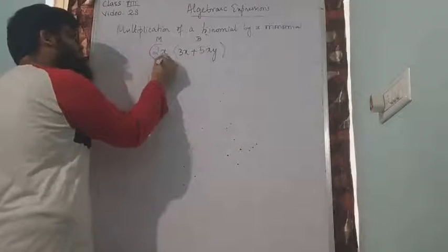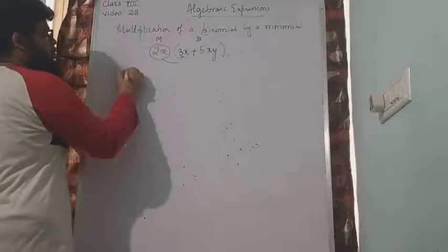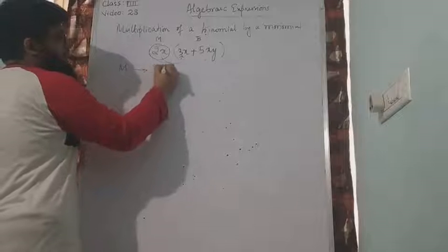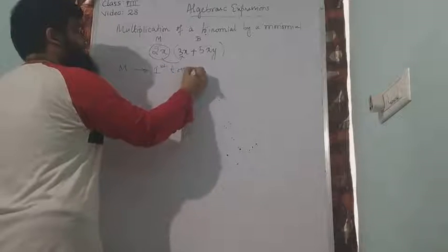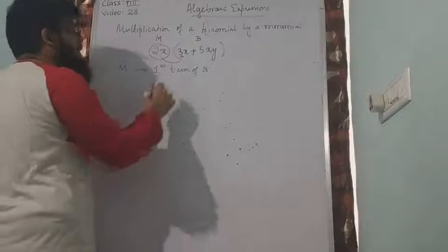First I will select this monomial and I will multiply with the first term of the binomial. So monomial with first term of binomial. M means monomial, B means binomial. After doing that, monomial I will put into 1 which is multiplication.